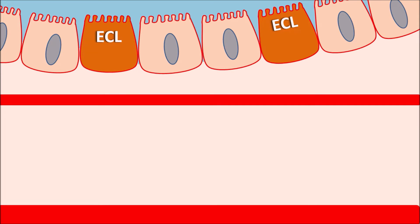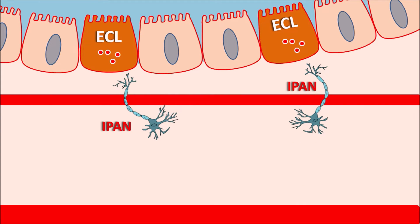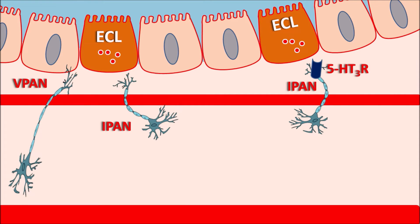In the colon, enterochromaffin cells release 5-HT as a local mediator in response to stimulation. The signal produced by 5-HT is carried through intrinsic primary afferent neurons, which are equipped with 5-HT3 and 5-HT1 receptors. A few of the afferent neurons — called vagal or extrinsic primary afferent neurons — send a signal to the CNS, to the area postrema within the CTZ, which is also equipped with 5-HT3 receptors.